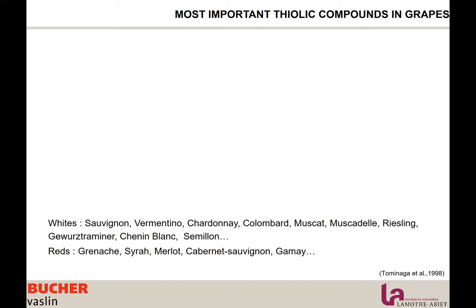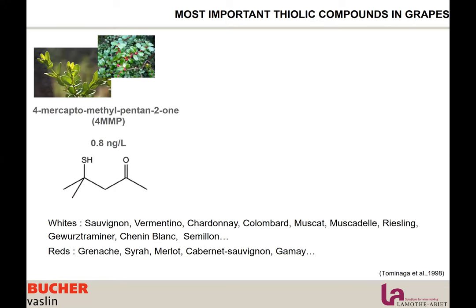We can find thiols in red wine, but mainly we focus on red analysis when talking about making rosé. Here you are going to see three of the main thiolic compounds. We are going to talk about 4-mercapto-4-methylpentan-2-ol, which I'm going to call 4-MMP. You can find the molecule on your screen, and this molecule smells like boxwood and cat pee.